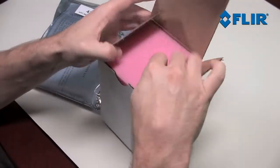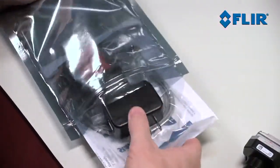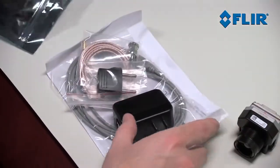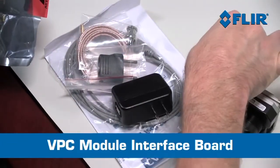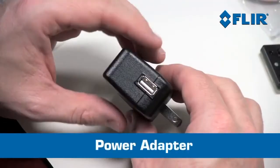First, open the box containing TAU-2 and remove the camera from the anti-static bag. Next, open the VPC kit, which should include a VPC module interface board, a video cable, a USB cable, and a power adapter.